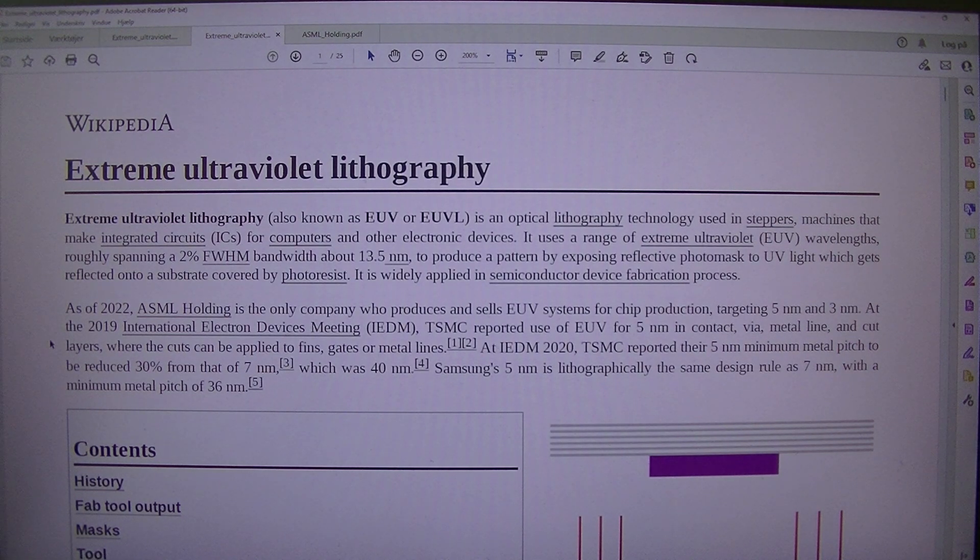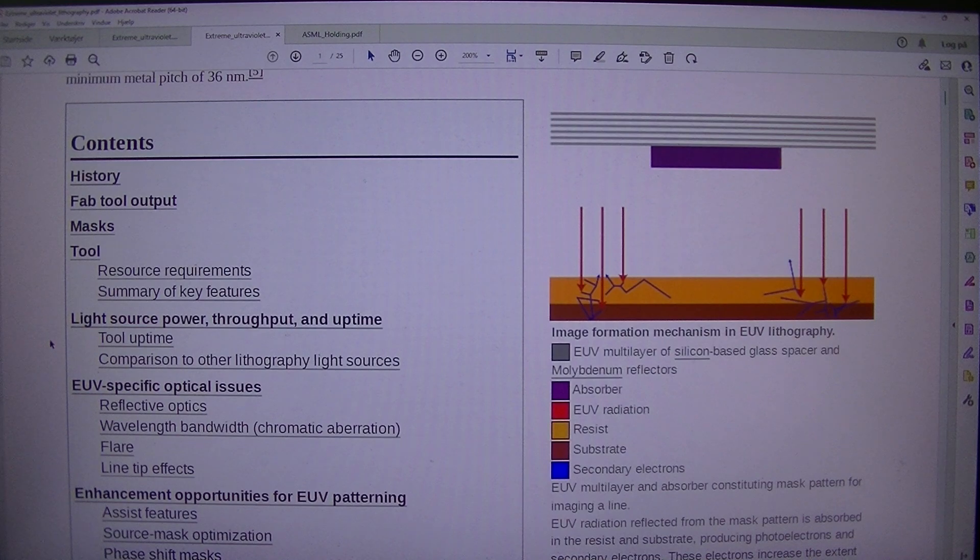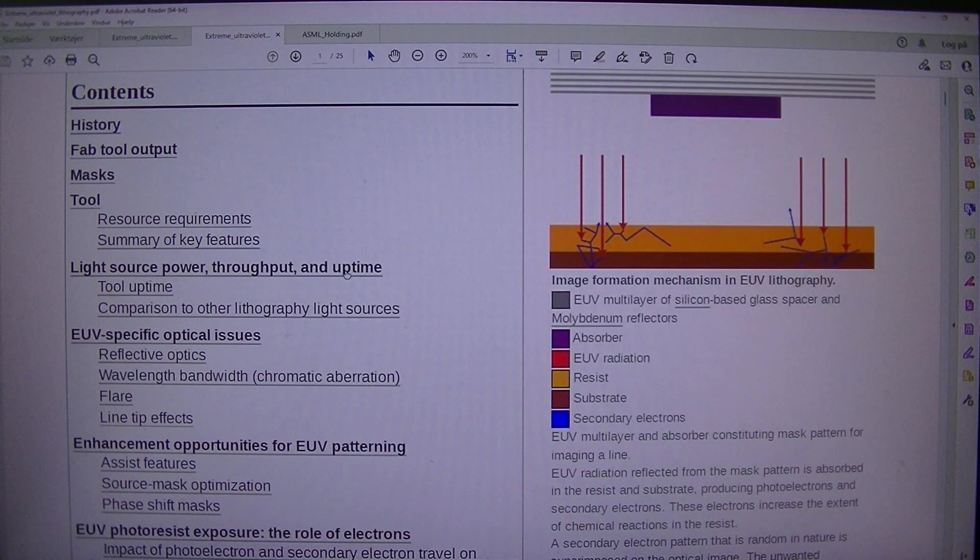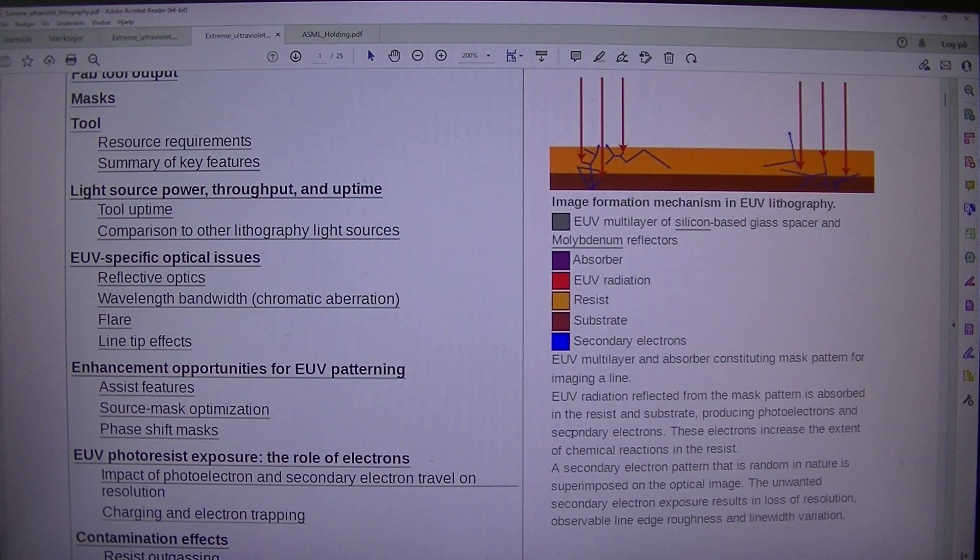Image formation mechanism in EUV lithography: EUV multilayer of silicon-based glass spacer and molybdenum reflectors, absorber, EUV radiation resist substrate, secondary electrons. EUV radiation reflected from the mask pattern is absorbed in the resist and substrate.